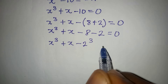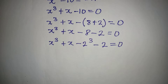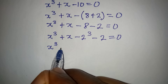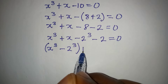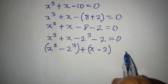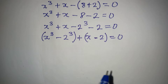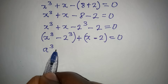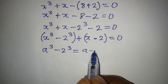So x to the power of 3 plus x minus 8 minus 2 equals zero. Notice that 8 is 2 to the power of 3. So we can rewrite this as x to the power of 3 minus 2 to the power of 3, and then plus x minus 2, equal to zero. At this point we can regroup.